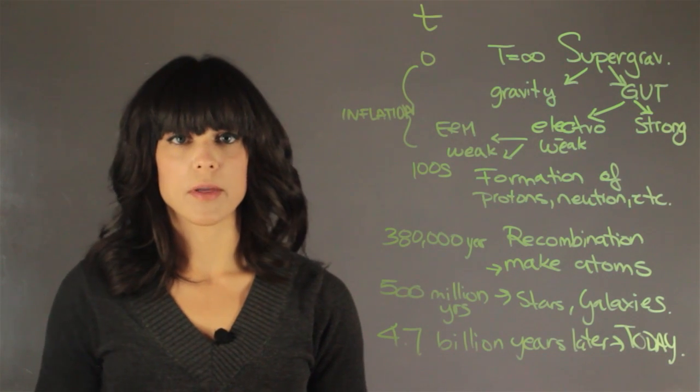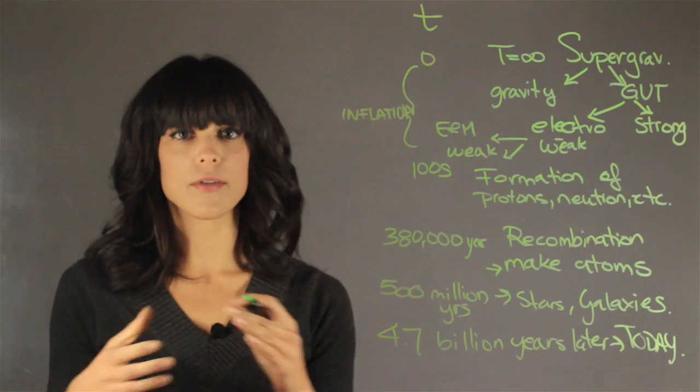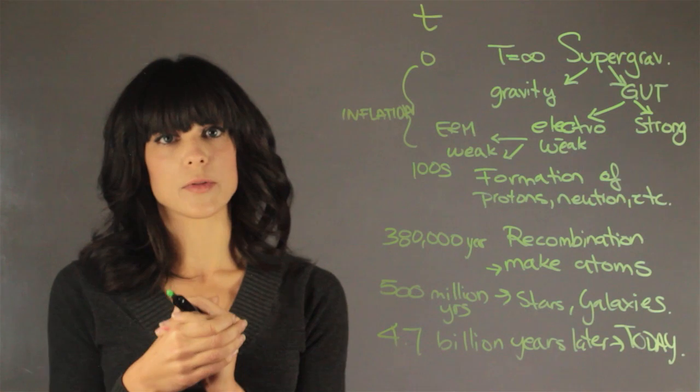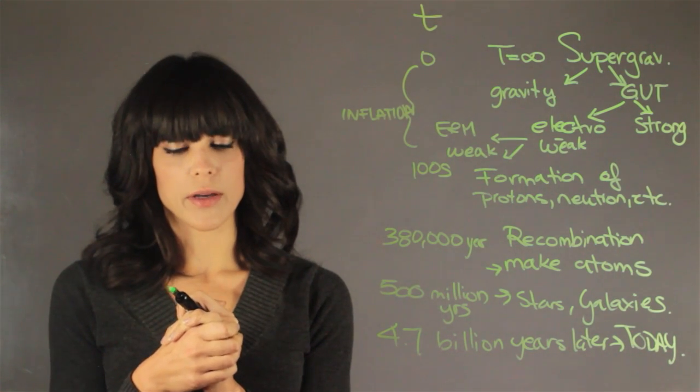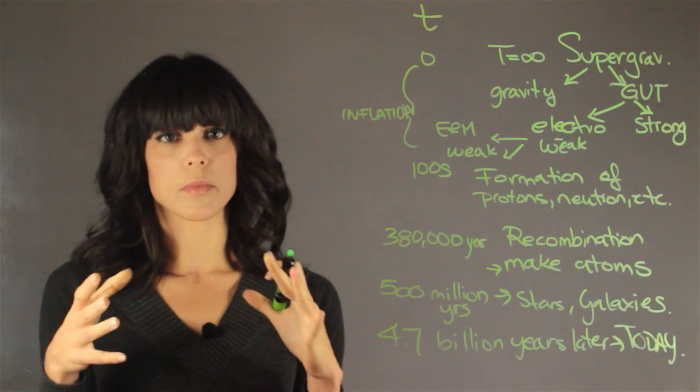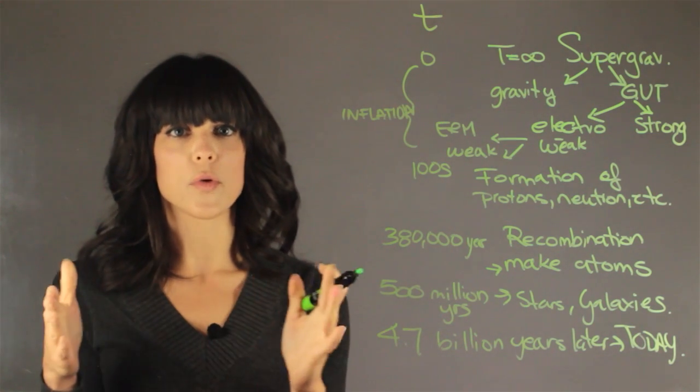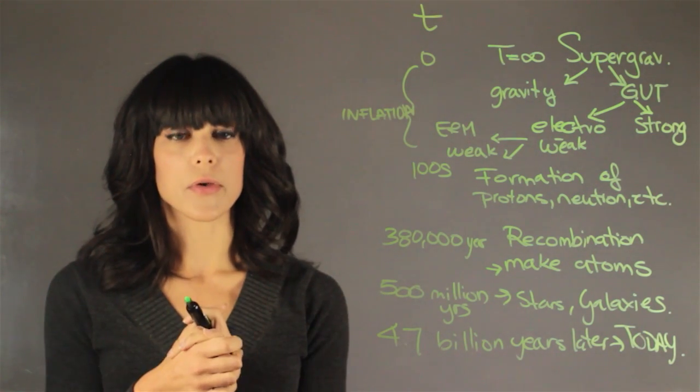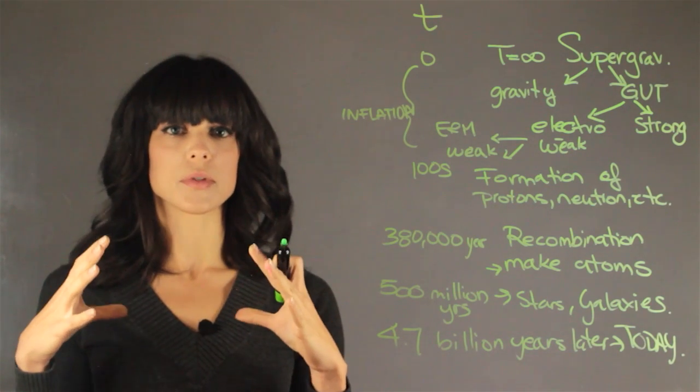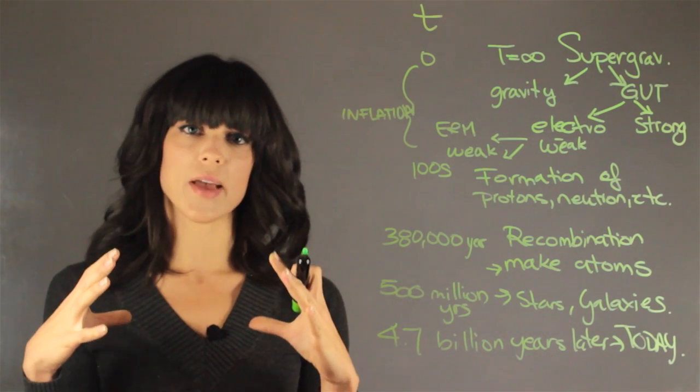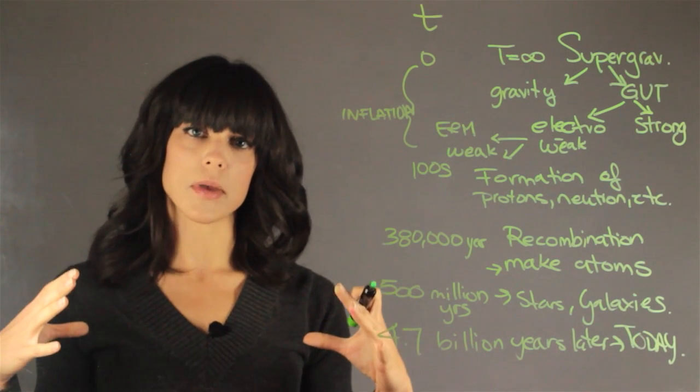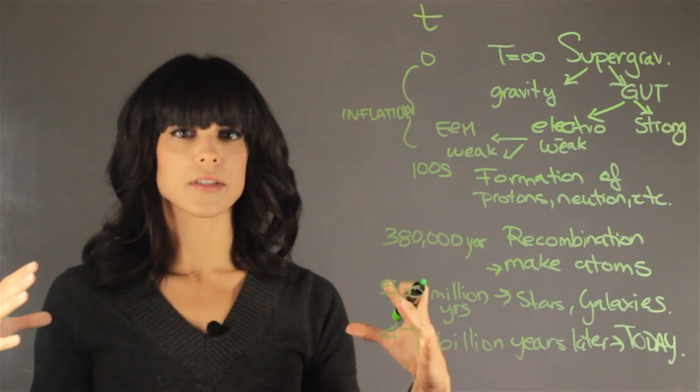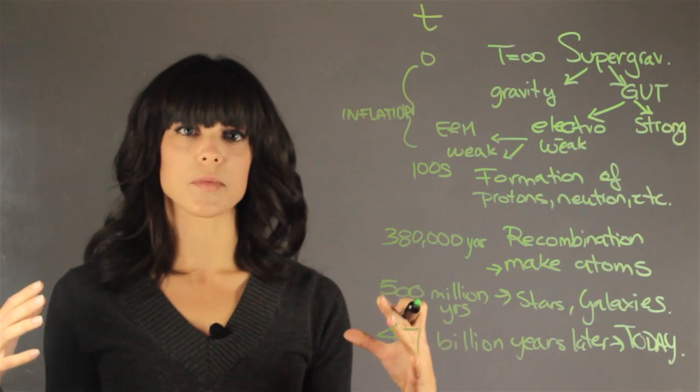So a simple explanation of the Big Bang would be you had everything compressed into a very small volume. All the forces were together. It goes through an inflation period in which all the forces separate, and now you can make your quarks. And then at some point, it cools down enough to make the components of atoms. Later on, it gets even cooler, so it can actually make atoms. And then years and years later, it actually starts making structures.